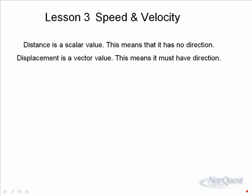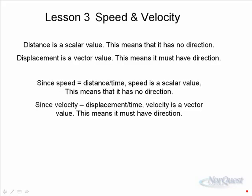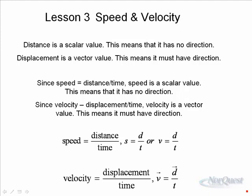Basically, when we say distance, it doesn't have a specific direction, but can be in any direction. Whereas displacement must have a definite and defined direction. Since speed is equal to distance over time, speed is a scalar value as well. So speed and distance are scalars, whereas velocity and displacement are vectors — meaning they must have direction. Speed equals distance over time; velocity equals displacement over time.